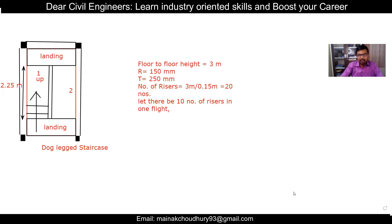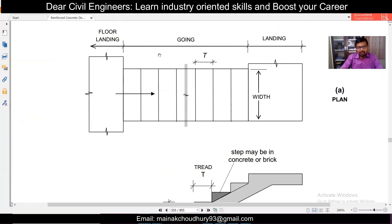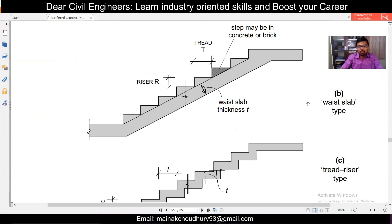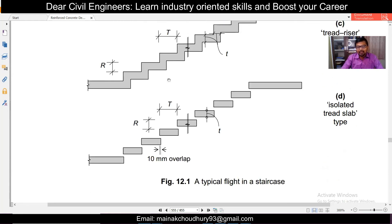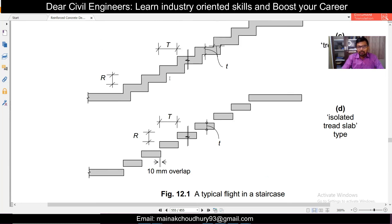To revise: the landing is the flat platform, the going is the flight of steps, and the tread is where you place your feet while the rise is the height of each individual step. The waist slab type staircase has a waist slab of uniform thickness. The tread-riser type has no waist slab - only rise and tread with ring reinforcement. The isolated tread type has only treads with no riser at all. These are the three common types of staircase.